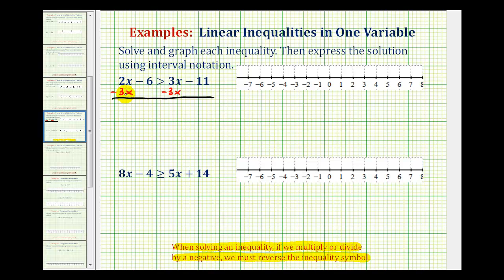So now we have 2x minus 3x, that's negative 1x or negative x, minus 6 is greater than, well 3x minus 3x is zero, that's why we did that. So we have negative 11.